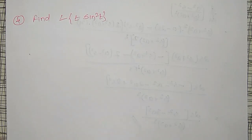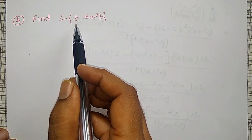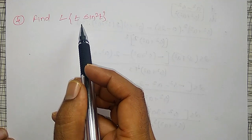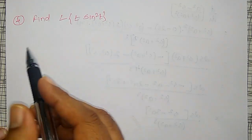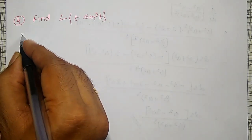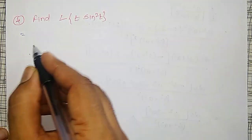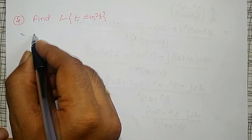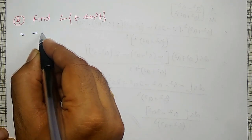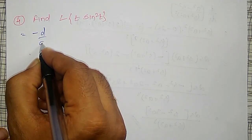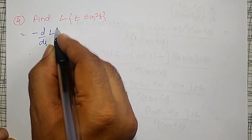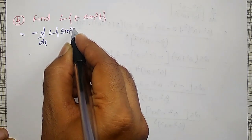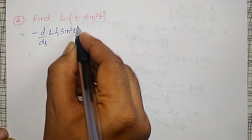Last example in this video: find the Laplace transform of t into sine squared t. Again, only t is multiplied here. That is, the Laplace transform will become minus d by ds of the Laplace transform of sine squared t.